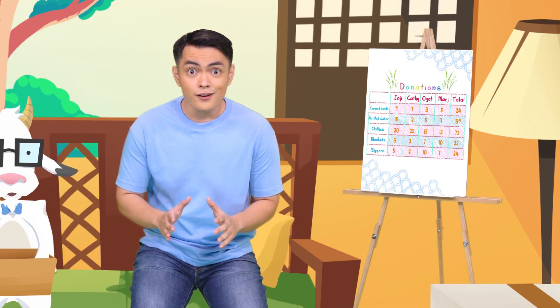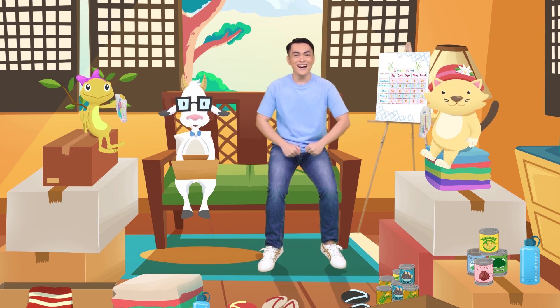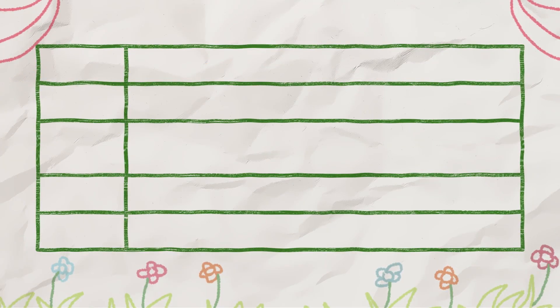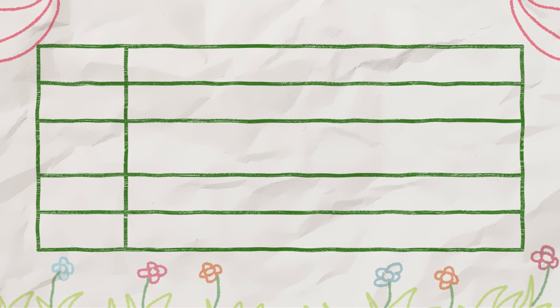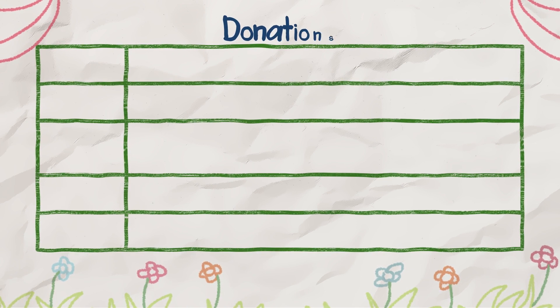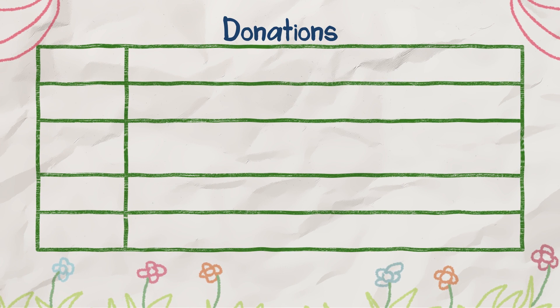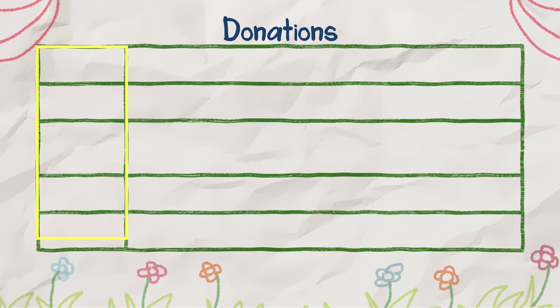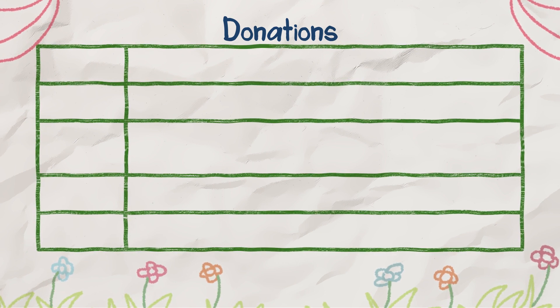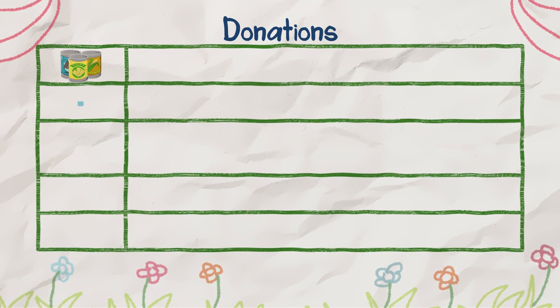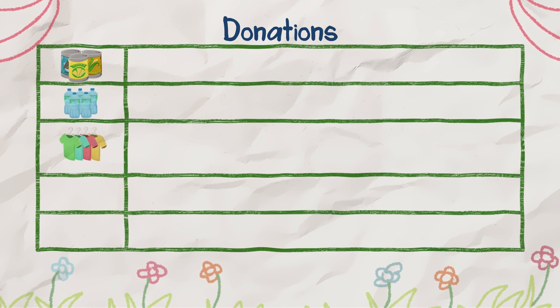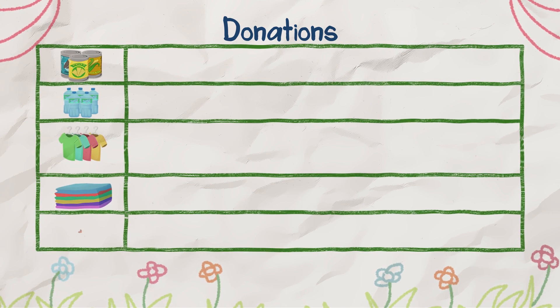Hey, do you want to help us make a pictograph? That's great. Come on, let's make a pictograph of the things we donated. Let's call this pictograph 'Donations.' We should put the items that we donated on this side. We donated canned goods, bottled water, clothes, blankets, and slippers.